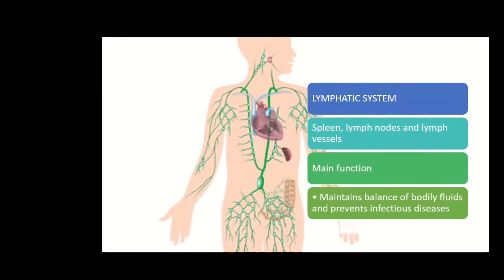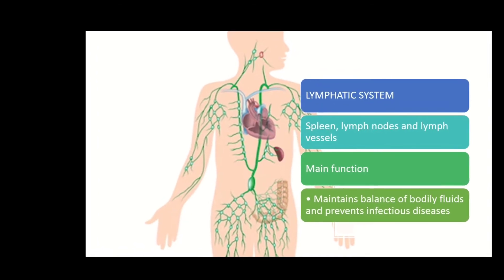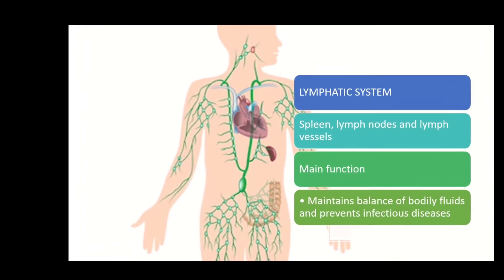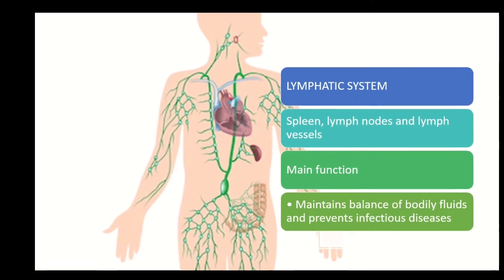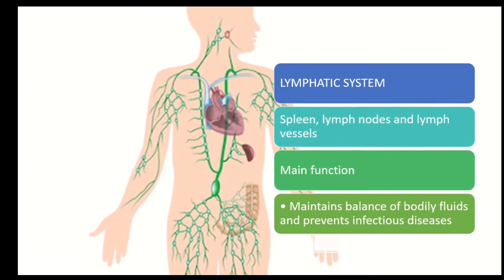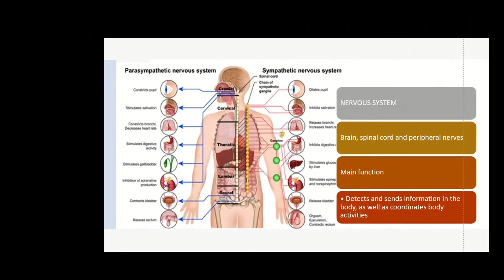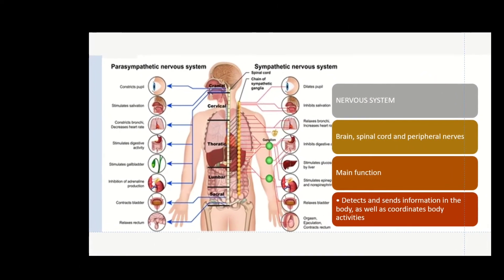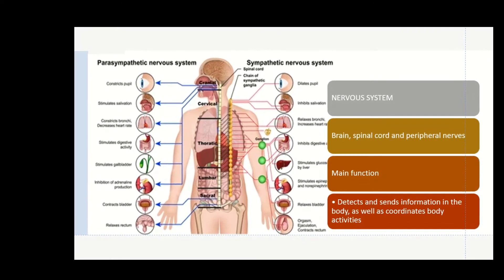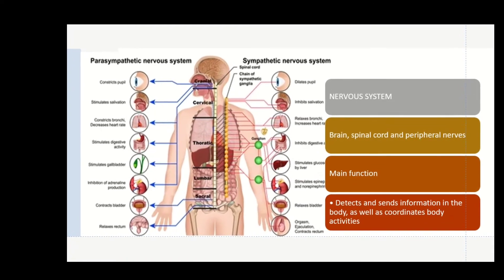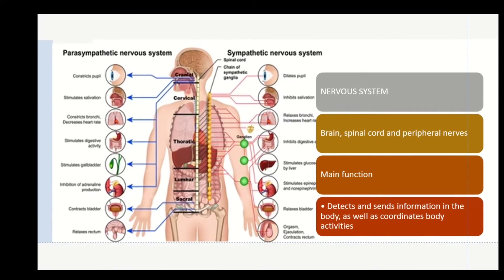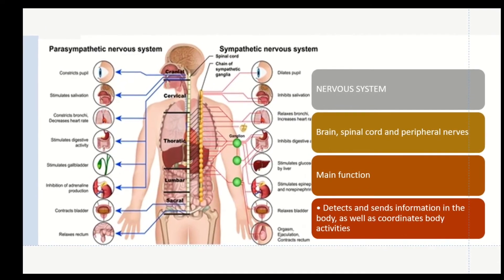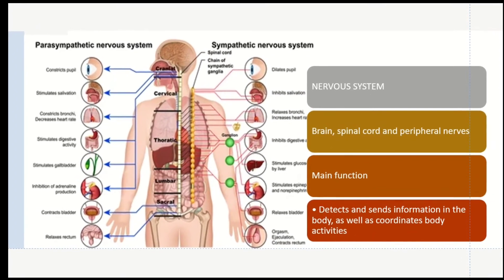The lymphatic system consists of the spleen, lymph nodes, and lymph vessels. The main function is to maintain the balance of bodily fluids and prevent infectious disease. The nervous system consists of the brain, spinal cord, and peripheral nerves. Its function is to detect and send information in the body as well as coordinate body activities.